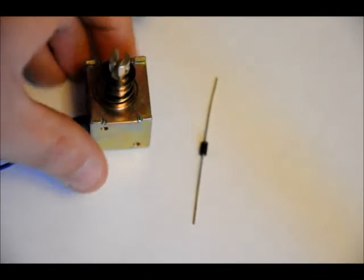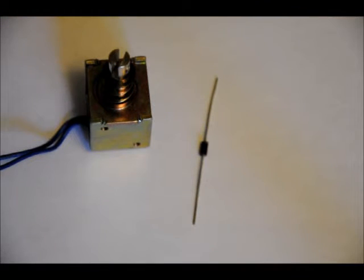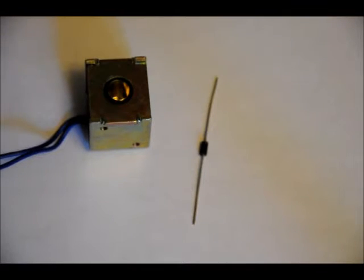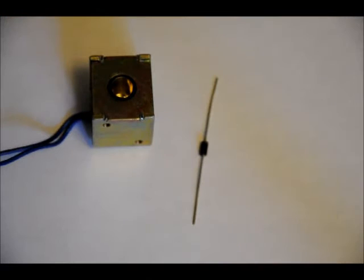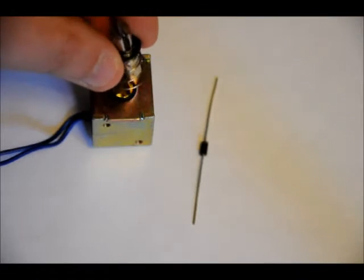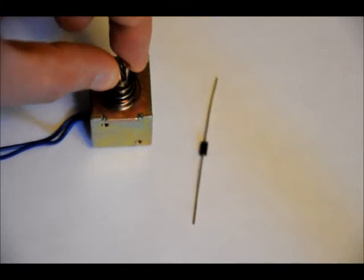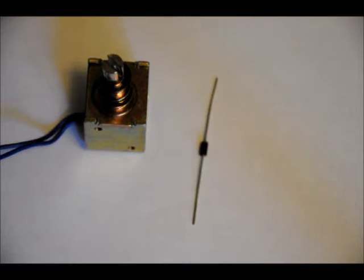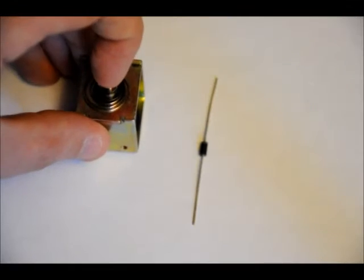So what happens is if I apply power, it pops back out. What happens is the module becomes magnetized. It's just a big coil inside. And what it does is it pulls this down with a good strong force at 12 volts. And when you release power, it comes back out.